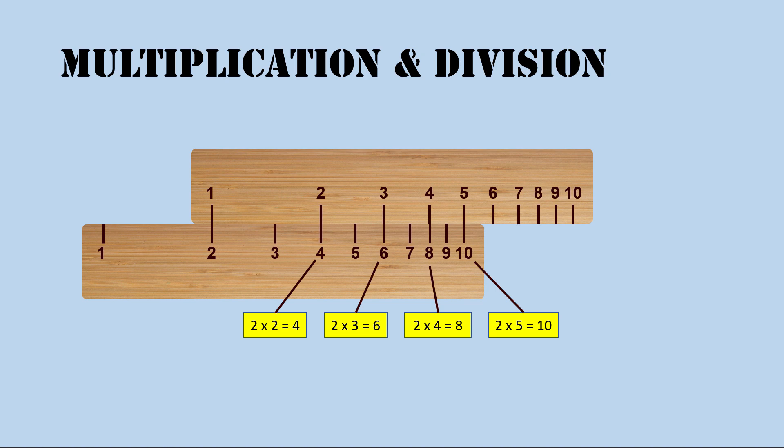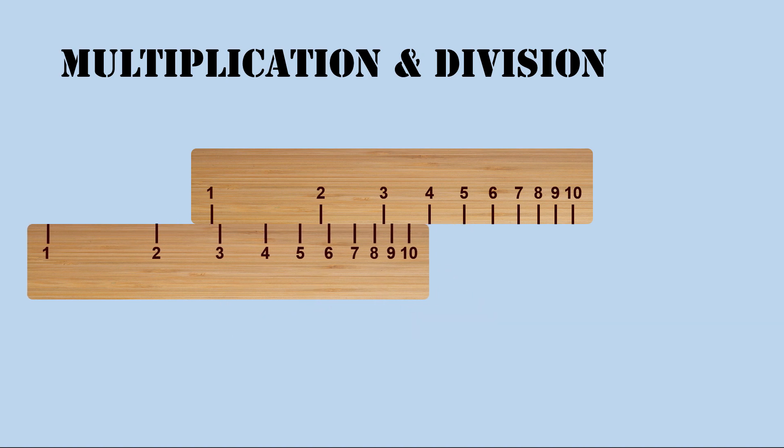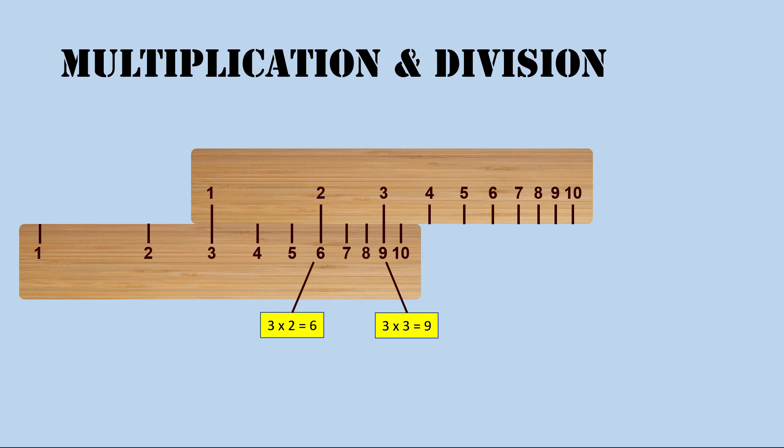This works with any number. Suppose we want to multiply by 3. Align the 3 on the bottom ruler to the 1 on the top ruler. The rulers are now set to a ratio of 3 to 1. Note that this also works with the position of the 2 reversed.